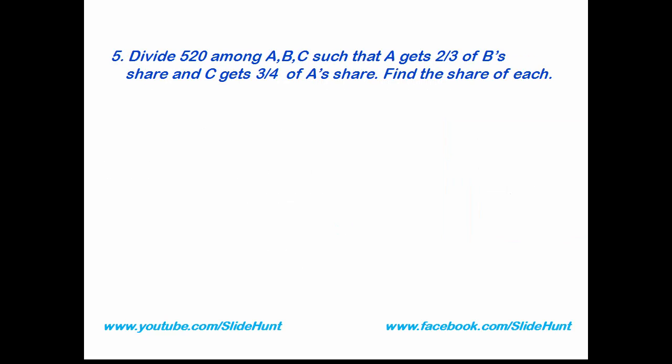Question number 5: Divide 520 among A, B, and C such that A gets 2/3 of B's share and C gets 3/4 of A's share. Find the share of each. According to the question, A gets 2/3 of B, so we can write A equals 2/3 of B. And C gets 3/4 of A, so we can write C equals 3/4 of A.